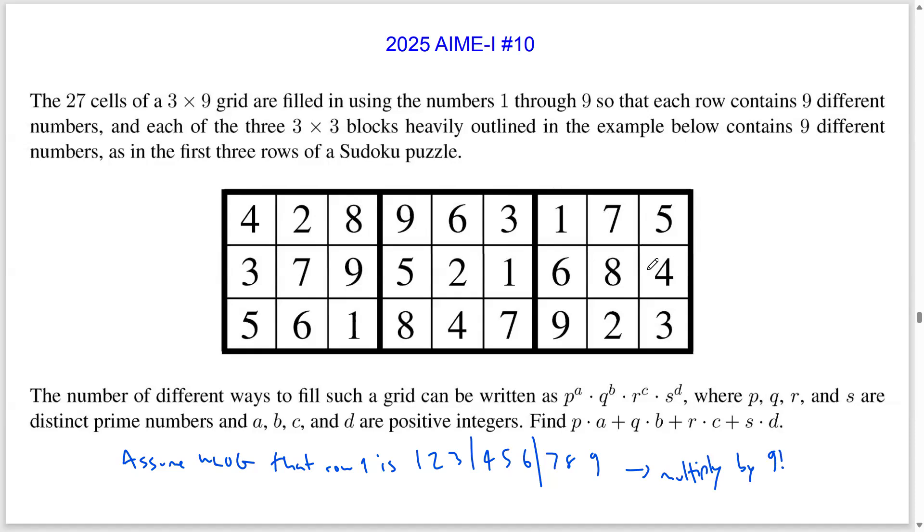The other observation is that once we fix the first row, the three numbers in each block's row—we don't really care about the ordering of those three numbers. For example, since 379 forms a valid way with the rest of the grid, if I permute 379, such as 937, this will also give a valid way. So for each of the six remaining blocks, I just need to consider which numbers go in those blocks without regards to the ordering. And then I can multiply by 3 factorial to the 6 to account for the ordering.